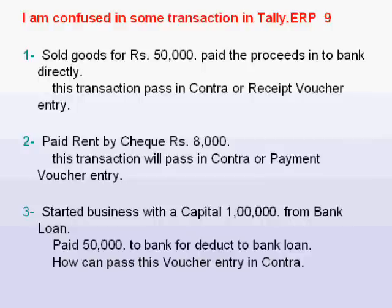For paying $50,000 to the bank to reduce the bank loan — this voucher entry will be passed in a payment voucher. This is not a contra entry, because with this voucher entry, our liability of bank loan will reduce in the balance sheet.